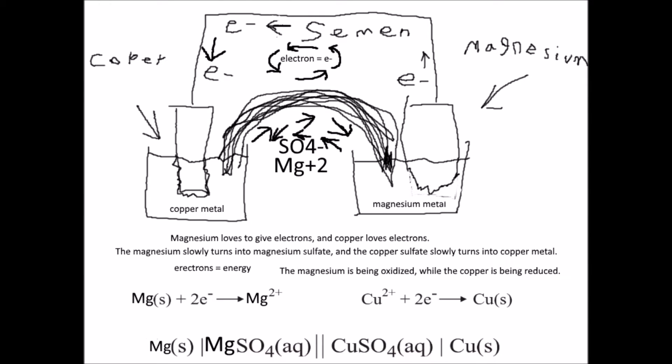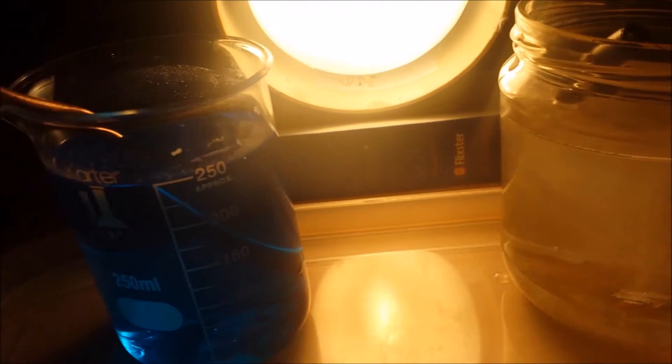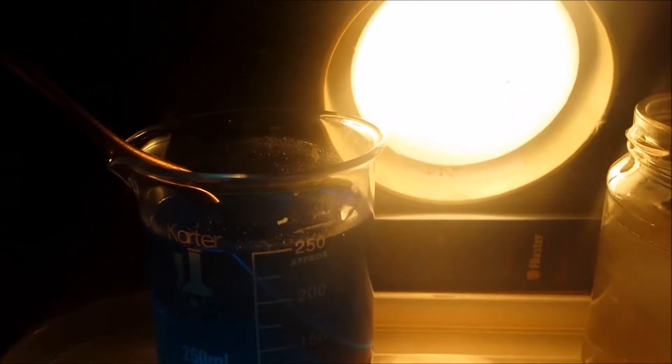Wow I found this article on education.gov and it says that the ions are able to move through the salt bridge and then the electrons flow through the wires. That's pretty good! Alright so I guess we need a salt bridge.